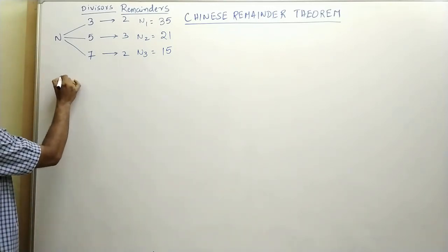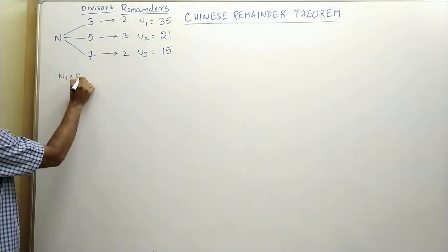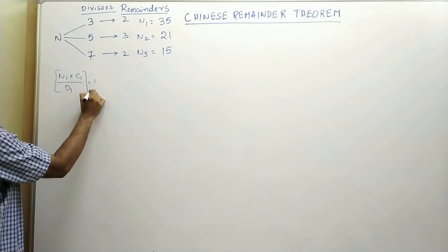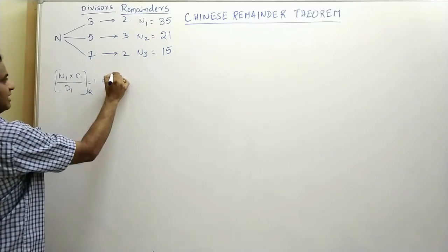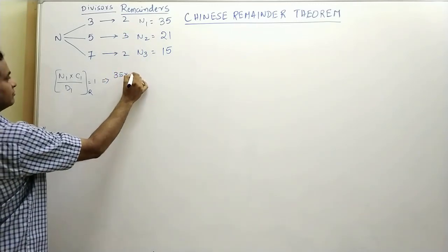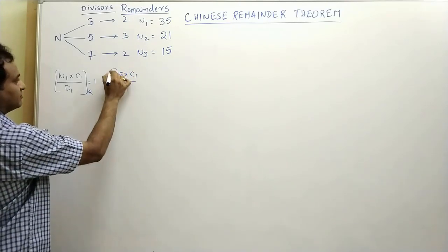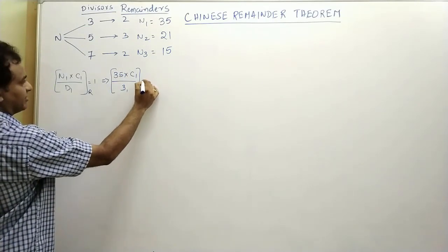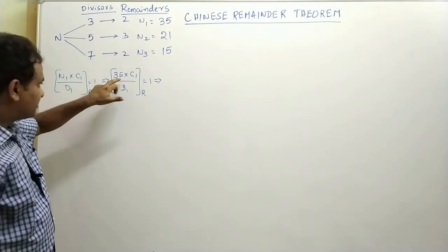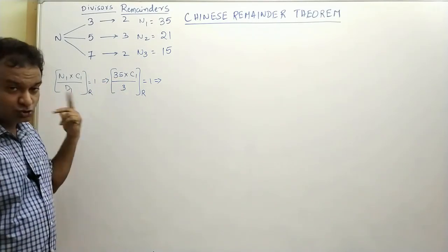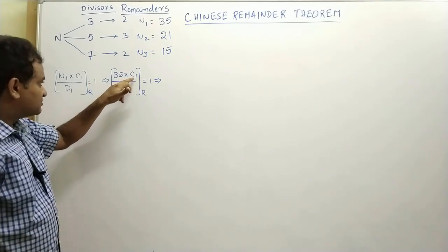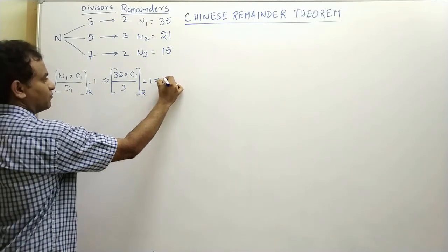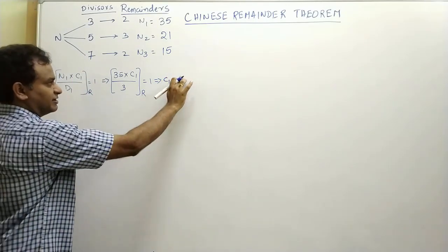The second step is to find a value c1 such that n1 × c1 divided by d1 gives a remainder of 1. Here n1 = 35, d1 = 3, and we need the remainder to equal 1. When you divide 35 by 3, the remainder is 2. If you substitute c1 = 2, then 35 × 2 = 70, and 70 divided by 3 gives a remainder of 1. Therefore, c1 = 2.